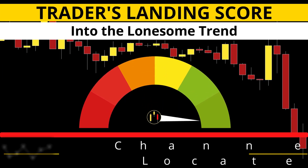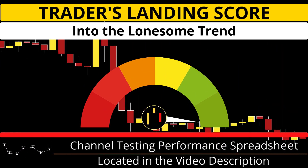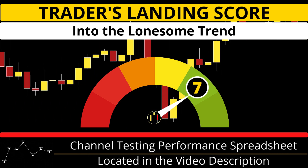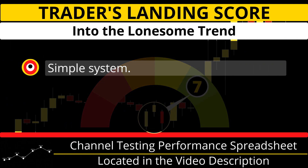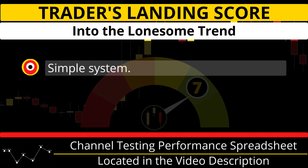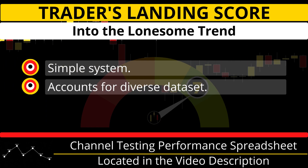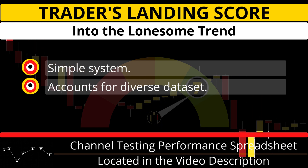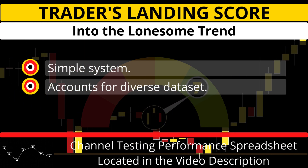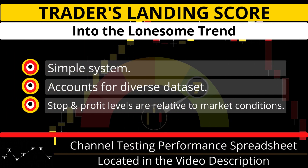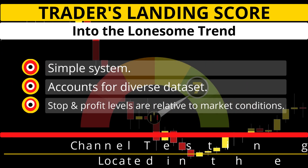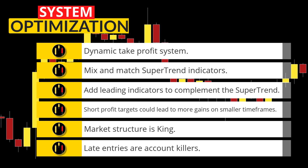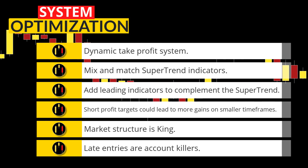What score would you give the strategy? Let me know in the comments below. I give this system a trader's landing score of 7, because this is a simple and effective rules-based system that utilizes the ATR along with pivot points to not only provide entries but also determine targets and stop levels. Remember, the enemy of great is good. I have six ideas on how we can improve this system.